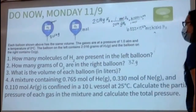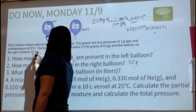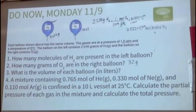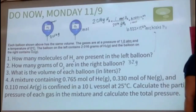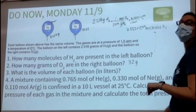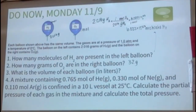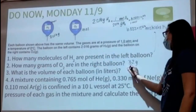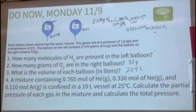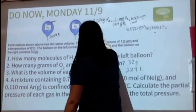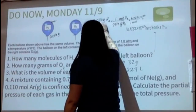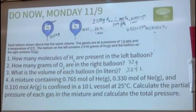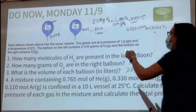Number three asks for the volume of each balloon in liters. The conditions are 1 ATM and 0 degrees Celsius, which is 273 Kelvin. One ATM and 273 Kelvin is STP — standard temperature and pressure — which means we can use molar volume: one mole of a gas occupies 22.4 liters. We have one mole of gas, so we have 22.4 liters.